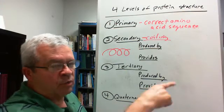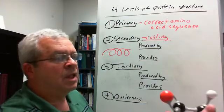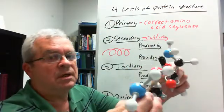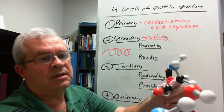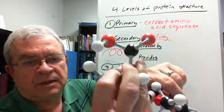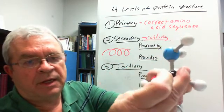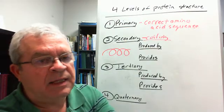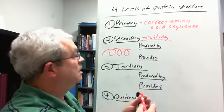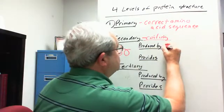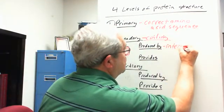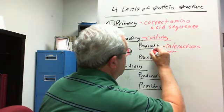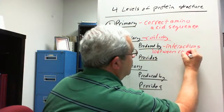Well, coiling is regular. It must be produced by something that's the same with every amino acid. What's the same with every amino acid? Well, every amino acid has got, what does this represent there? A carboxyl group. What does that represent on the other end? An amino group. So there's an interaction between the carboxyl groups and the amino groups across the chain. And so it's produced by interactions between carboxyl and amino groups.